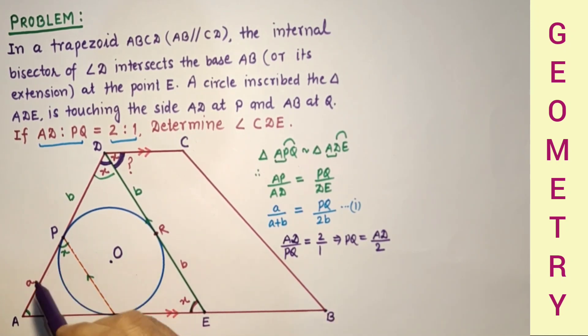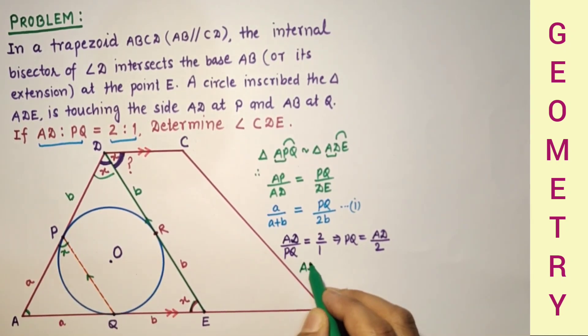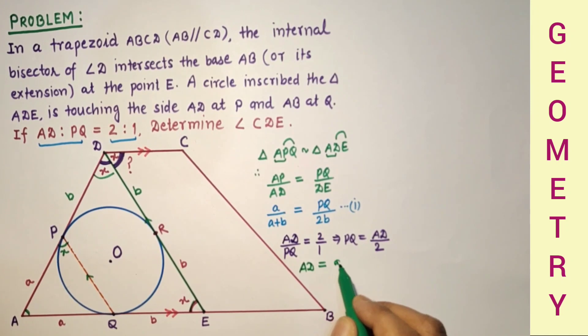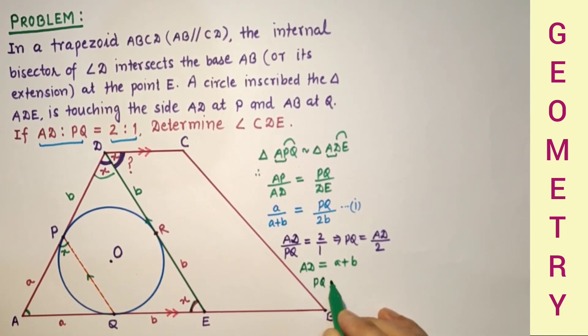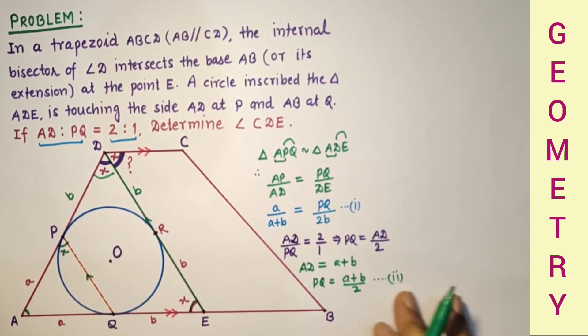PQ is AD by 2. But AD is equal to A plus B, therefore PQ is equal to A plus B by 2. This is the second relation we found.